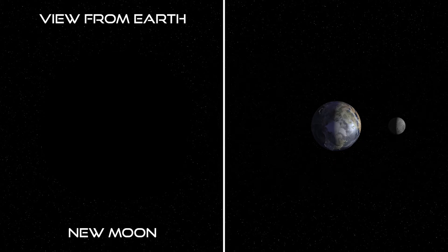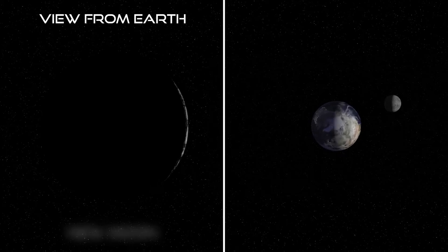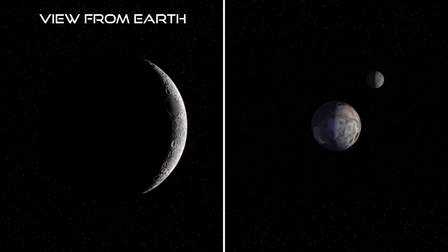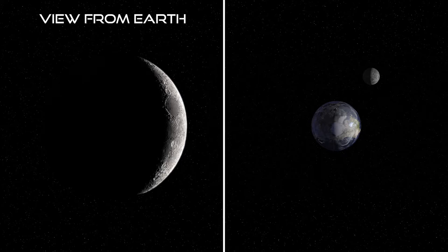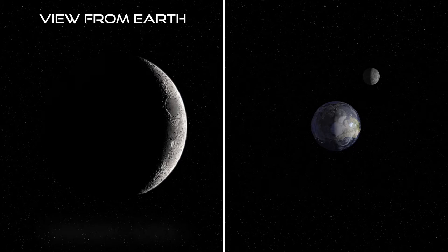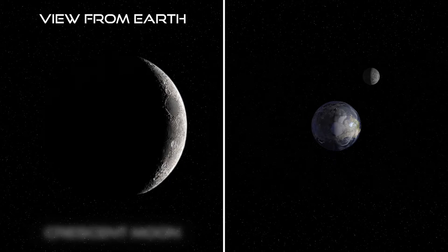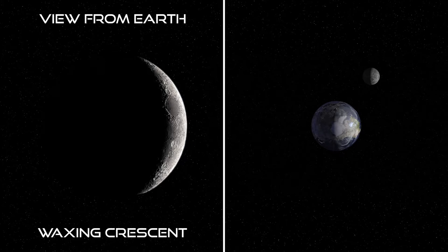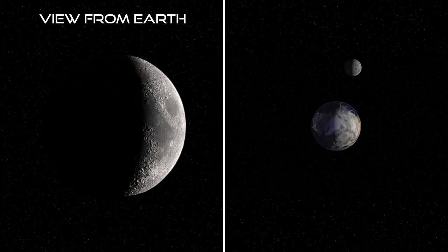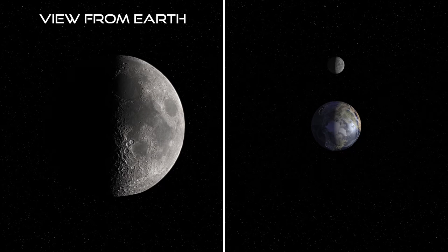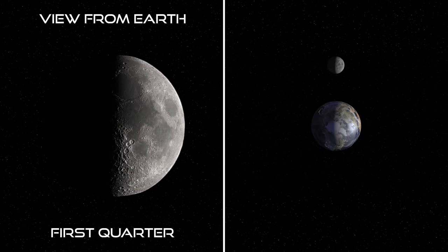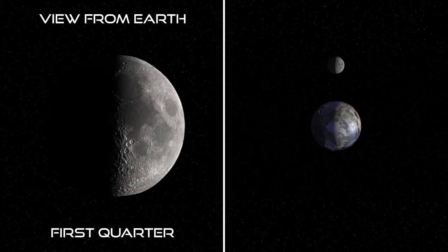As the Moon moves around the Earth in our model, we see only a thin sliver of it on Earth. This is called a crescent Moon, and because it's growing larger, it's called a waxing crescent. As the Moon continues to wax, or grow larger, it reaches a point where one half of it is lit. This is called the first quarter, because the Moon is in the first quarter of its orbit around Earth.